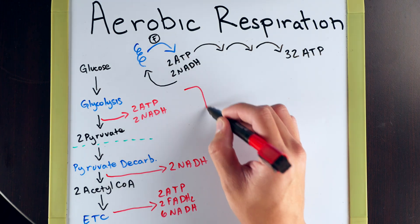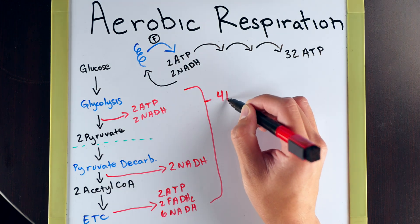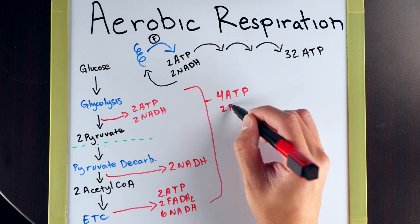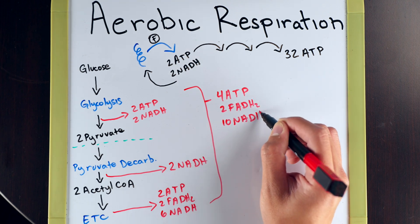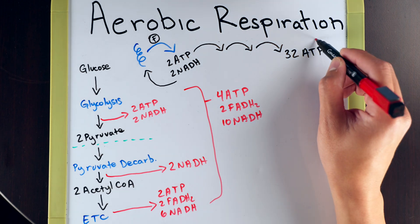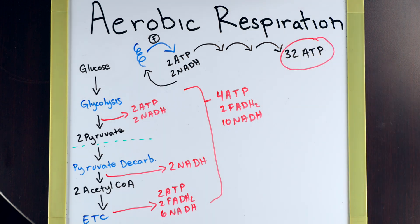And now, once we add all these things up together, you can see that we have four ATP, two FADH2, and ten NADH. But you might be saying to yourself, Fritz, I thought we were going to get 32 ATP, not four in these other molecules that you mentioned, and I'm not sure about what the significance is.